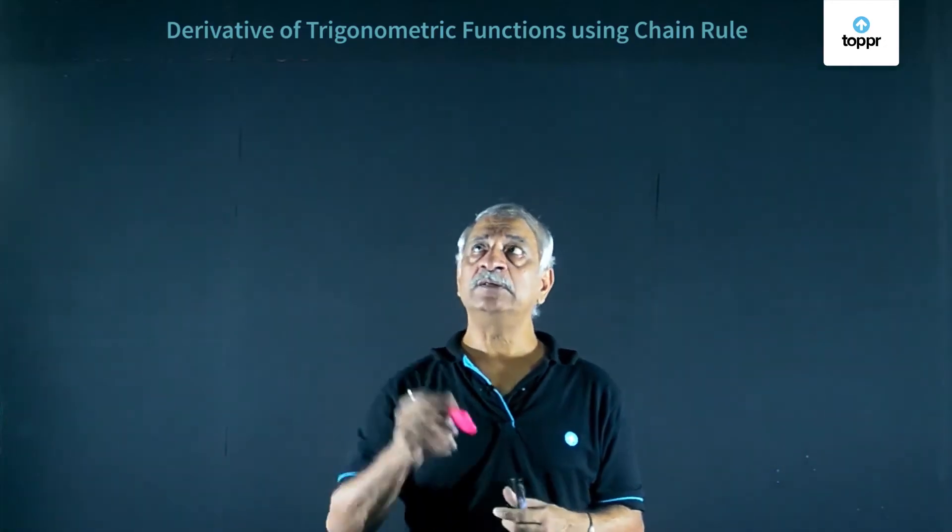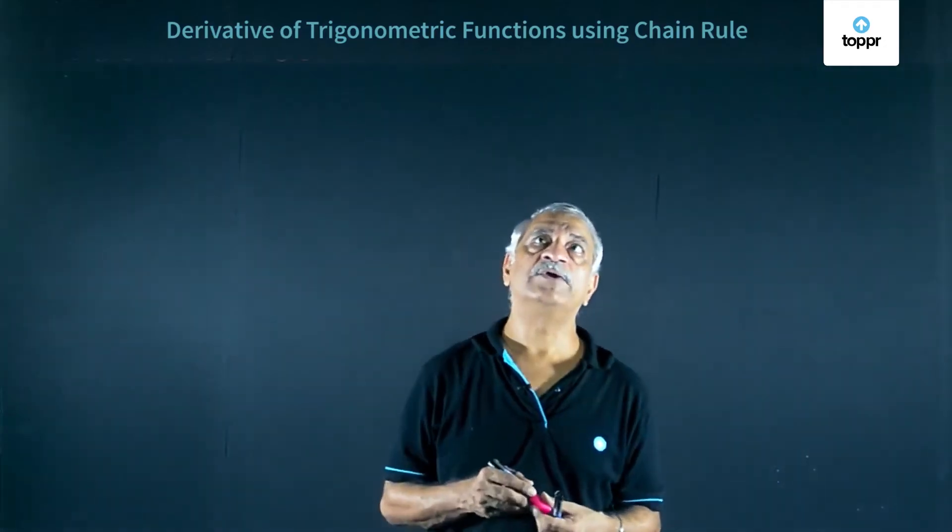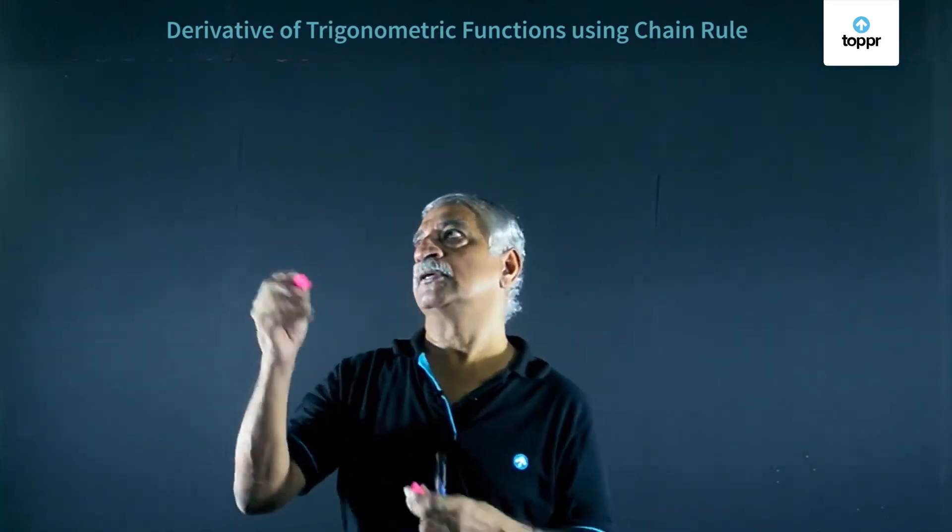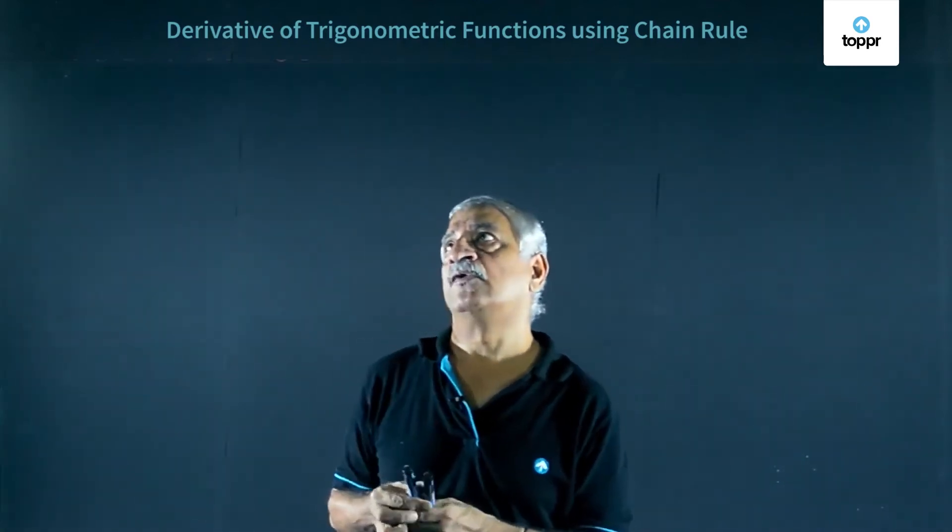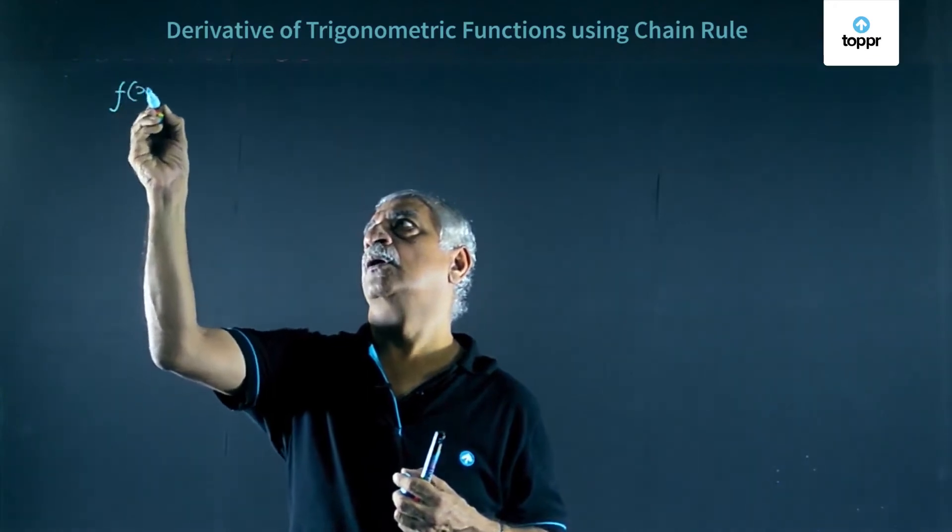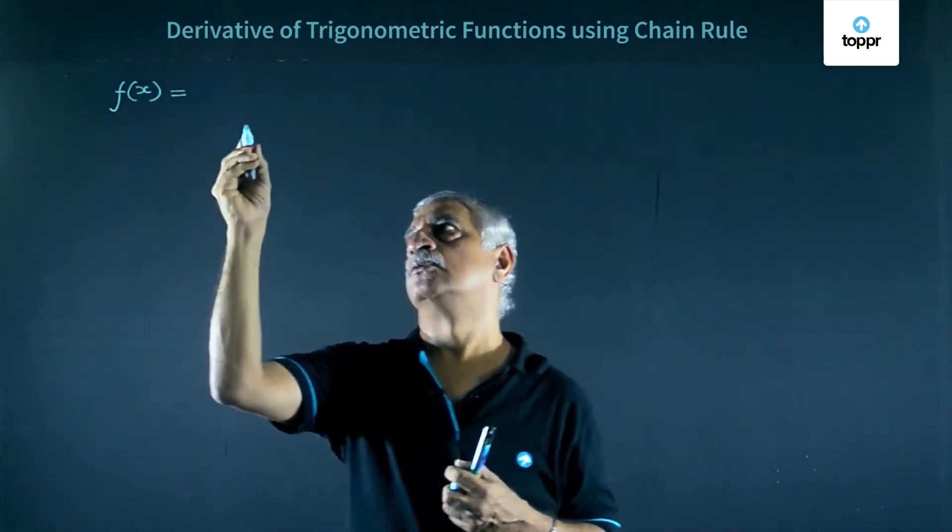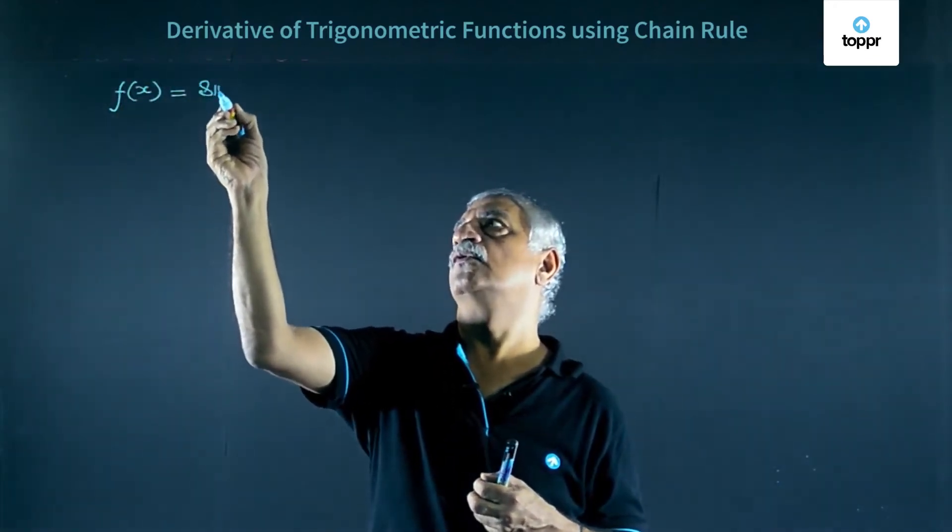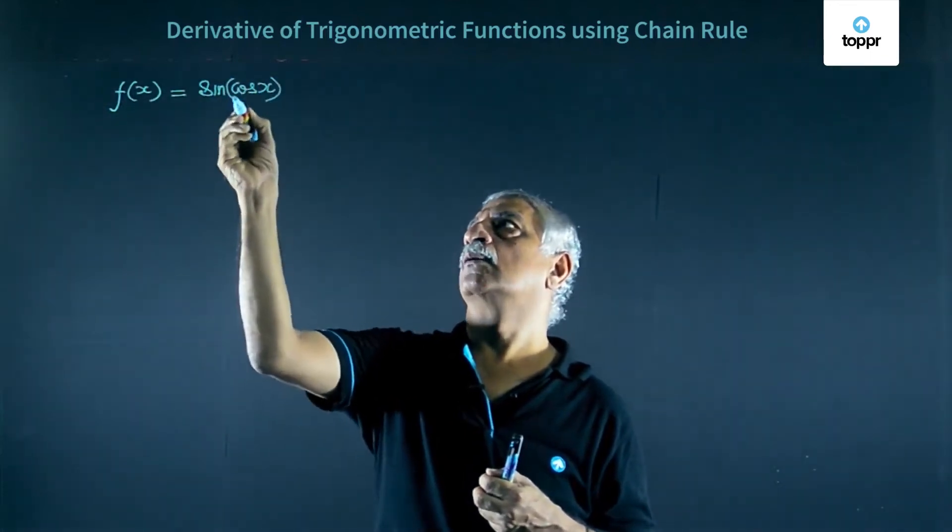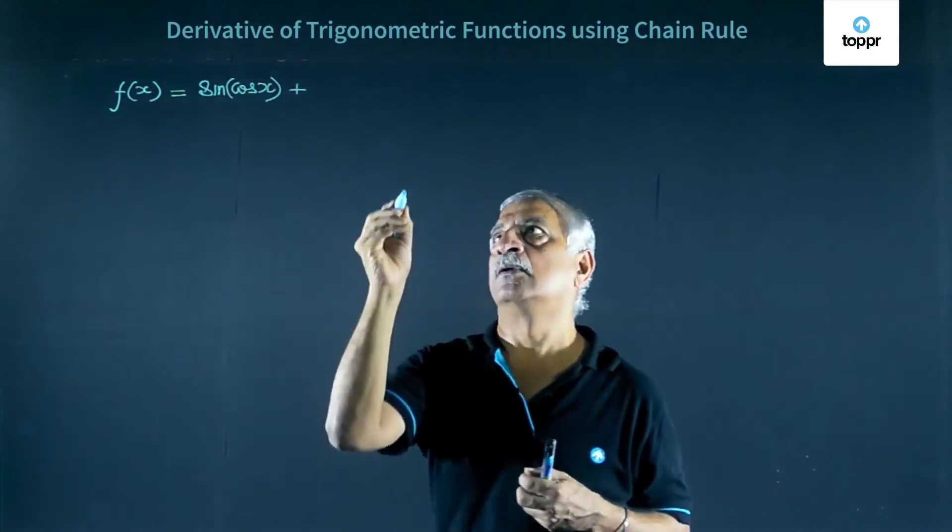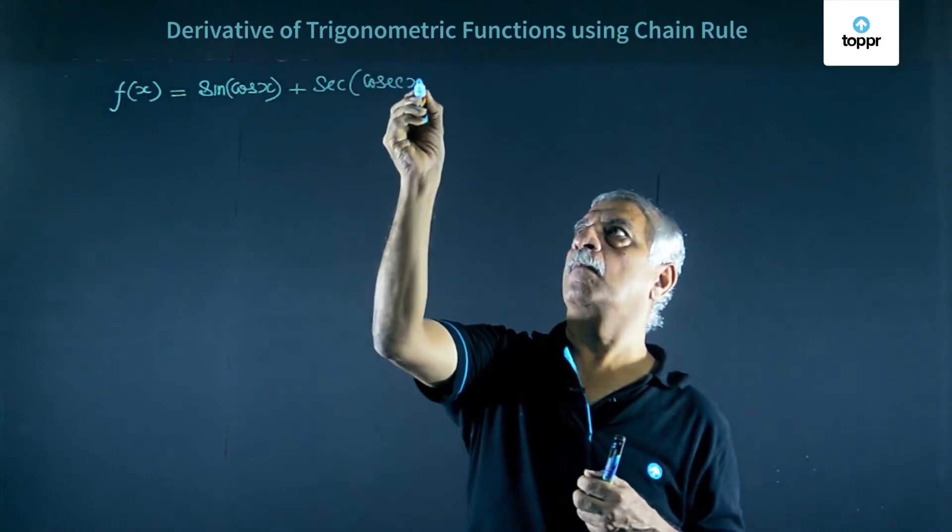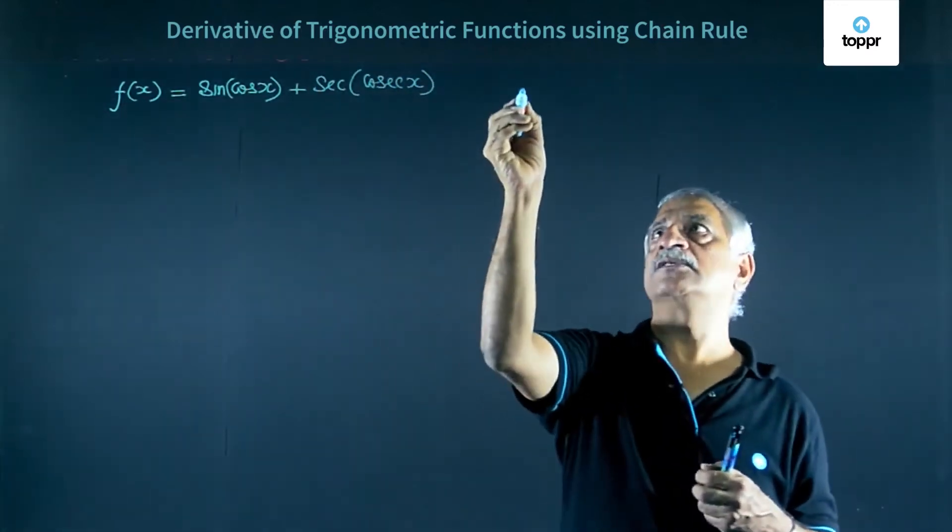Evaluation of a derivative of a trigonometric function using chain rule. Let us take up an example of a function f of x is equal to sine of cos x plus sec of cos x